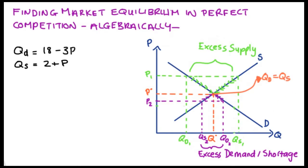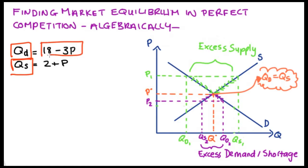This is really the key: the equilibrium position only obtains when our quantity demanded is equal to our quantity supplied. You can see intuitively from the stories about excess supply and excess demand why that's the case. And this helps us with our algebra, because we have expressions for quantity demanded — Q subscript D is equal to 18 minus 3P — and for quantity supplied, which is equal to 2 plus P. So the first step in solving for equilibrium is to set quantity supplied equal to quantity demanded.